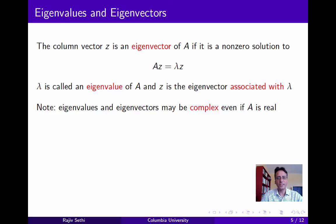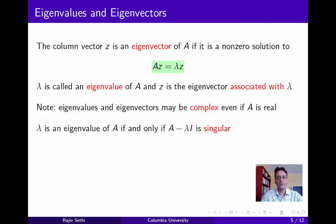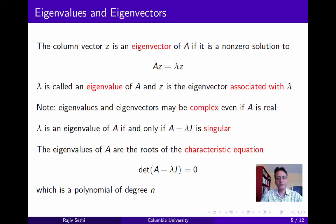Complex eigenvalues play an important role in the analysis of oscillations or economic fluctuations. Note also that lambda is an eigenvalue of A if and only if the matrix A minus lambda I is singular. To see this, rewrite AZ = lambda Z as (A minus lambda I)Z = 0. If A minus lambda I were invertible, you could pre-multiply by its inverse to get Z = 0, contradicting the requirement that Z be non-zero. So lambda is an eigenvalue if and only if A minus lambda I is singular, meaning the determinant of A minus lambda I equals zero. The eigenvalues of A can thus be computed by solving the degree-n polynomial obtained by setting this determinant to zero.